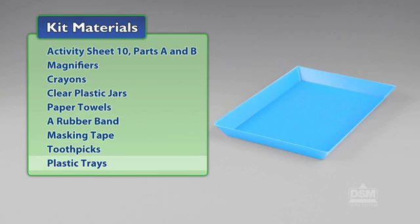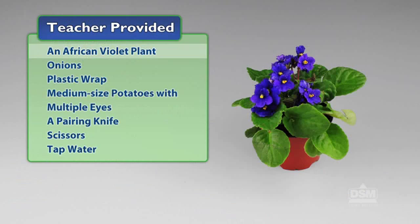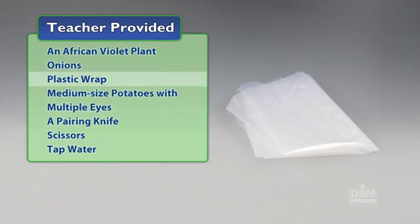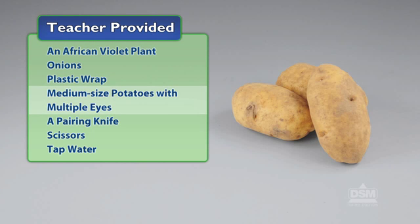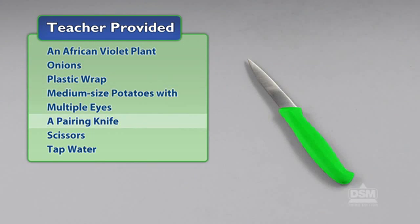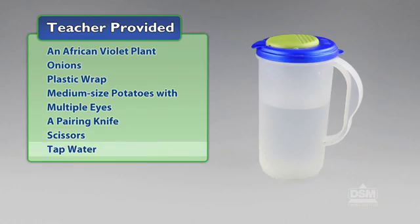You will also need to provide an African violet plant, onions, plastic wrap, medium-sized potatoes with multiple eyes, a paring knife, scissors, and tap water.